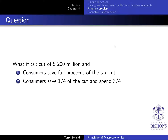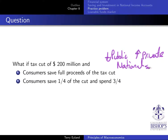What happens if consumers save the full proceeds? This tax cut, assuming government spending doesn't change, is going to lead to a greater budget deficit — or a smaller surplus — by $200 million. If consumers save it all, that's a drop in public saving offset by an equal increase in private saving. In this case, national saving is unchanged, so investment is unchanged as well.